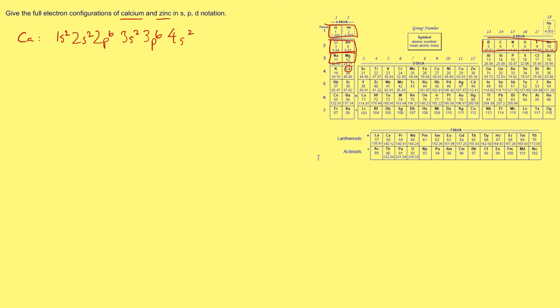That's the electron configuration of calcium. Now let's do zinc. Zinc has the same configuration as calcium up to that point. For zinc, this is the 3d subshell, and by the time you get all the way along to zinc you've got a full 3d subshell, so we put 3d10. It doesn't really matter whether you write 4s2 3d10 or the other way around. Because the 3d subshell is full, the 4s2 electrons are the valence electrons for calcium, and for zinc the 4s2 are also the valence electrons.